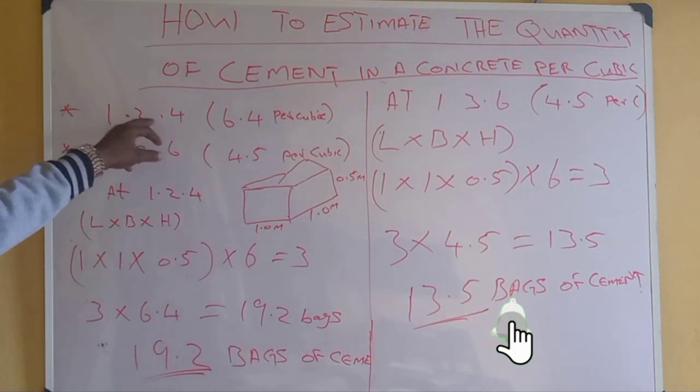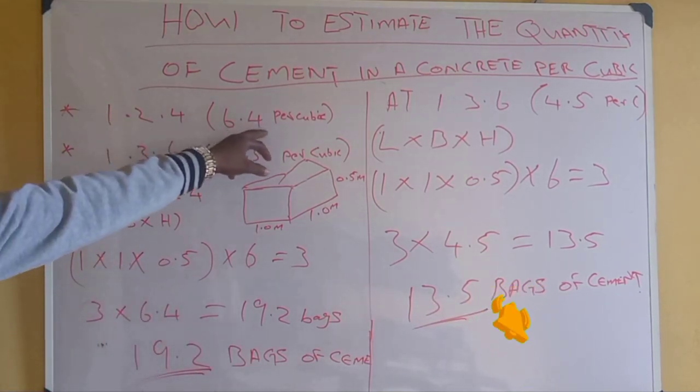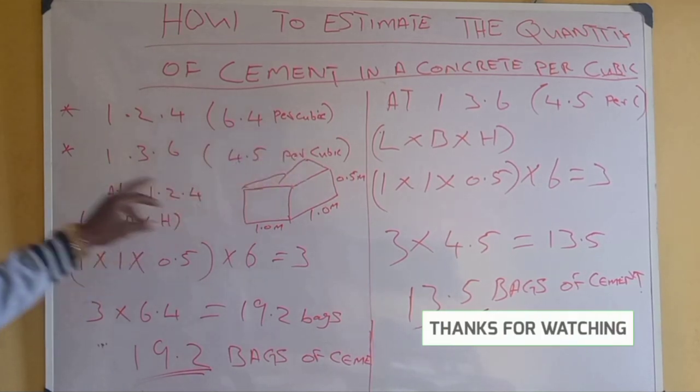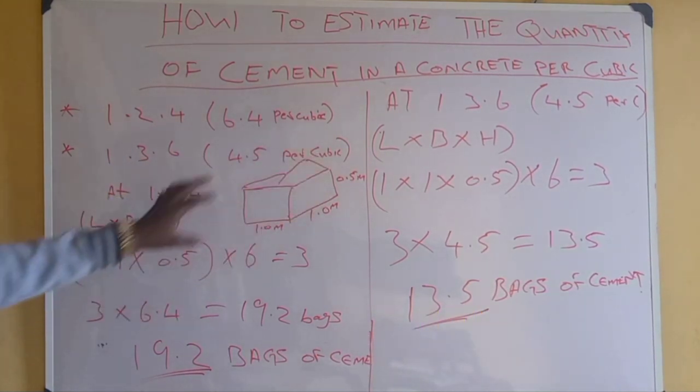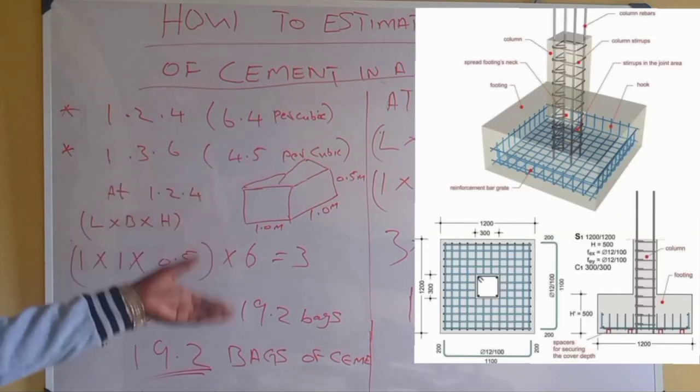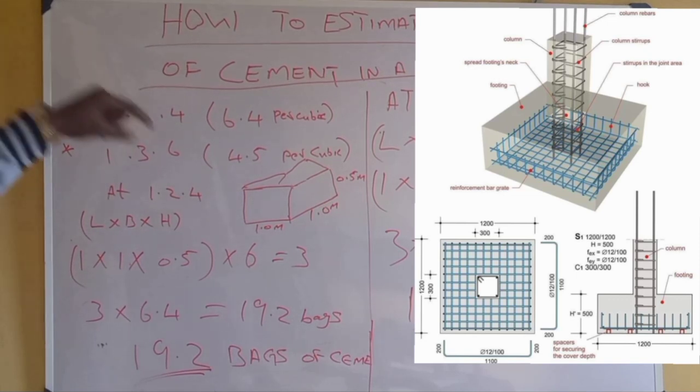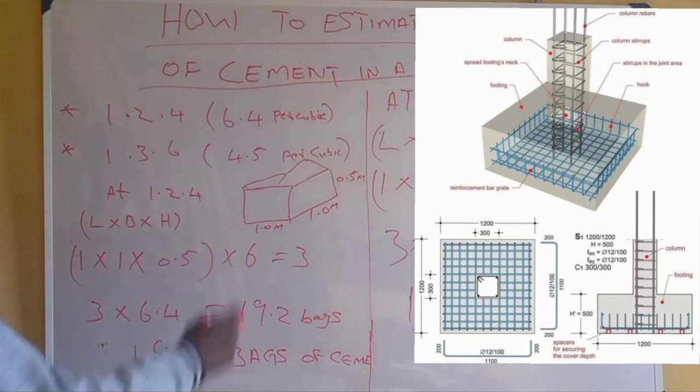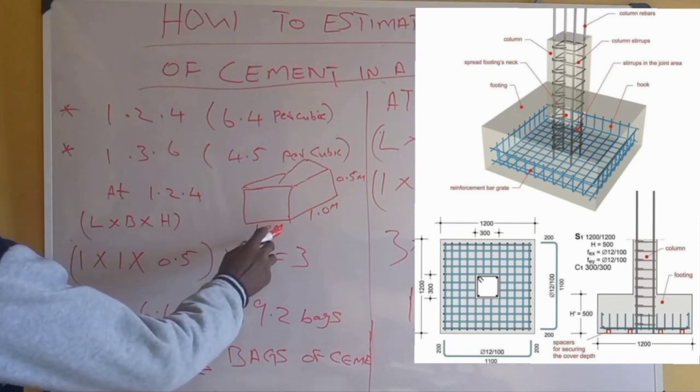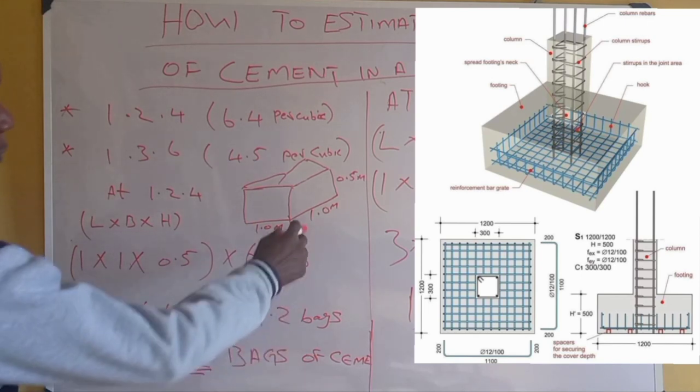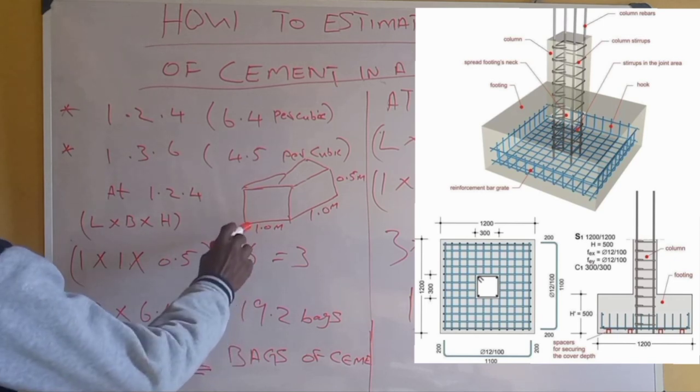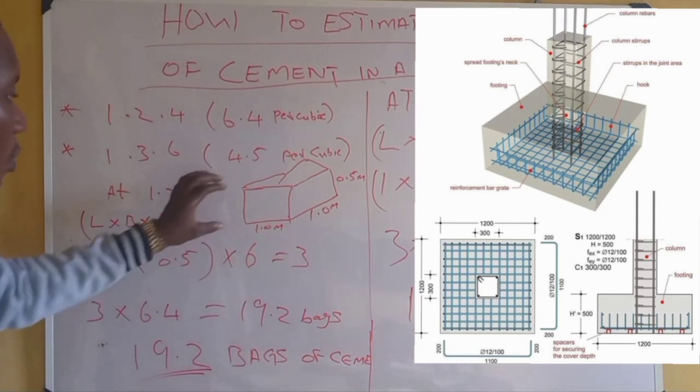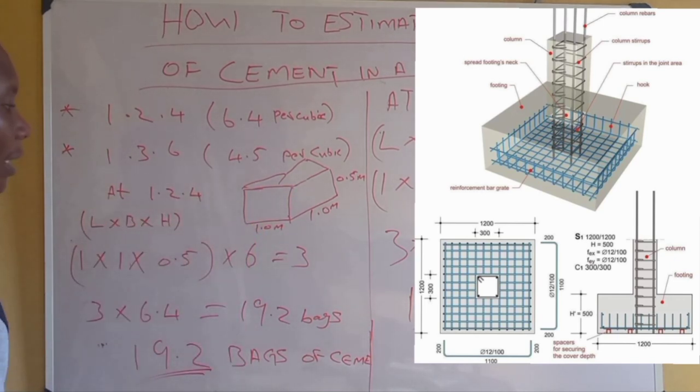For instance, at ratio 1:2:4, we have 6.4 bags per cubic meter. We are given a box of column to construct or design. You are given a column box to control when you want to know the number of meters that will enter. The length is 1 meter.